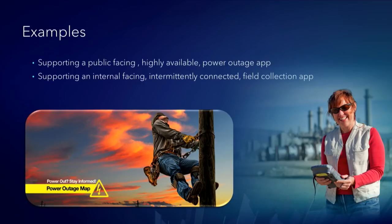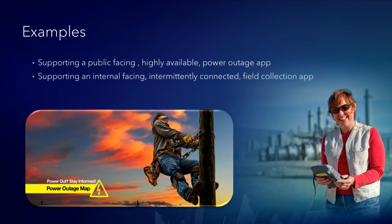A couple examples of how different publication strategies differ by use case: if you're supporting a public-facing, highly available user base — maybe an outage viewer in a natural disaster — that's probably very simple functionality-wise but needs to be extremely highly available and support large volumes of users. On the flip side, you might have a work group going into the field collecting data that goes straight into enterprise databases — it's editing, it's disconnected, it's a small, more advanced user base. These are two very different scenarios, and your publication strategy will be quite different.